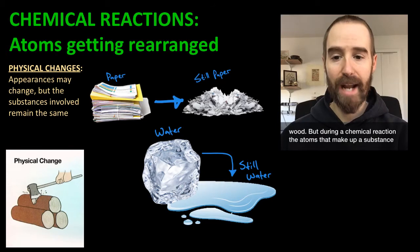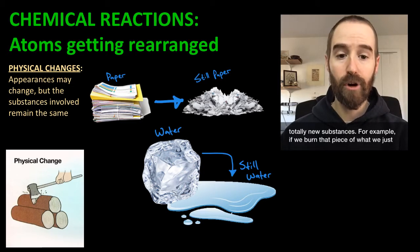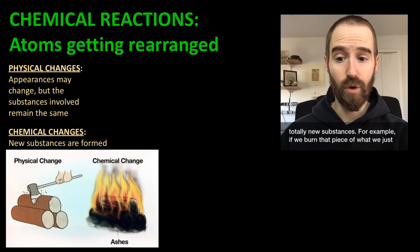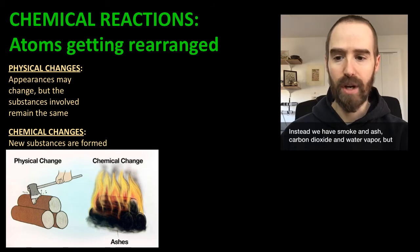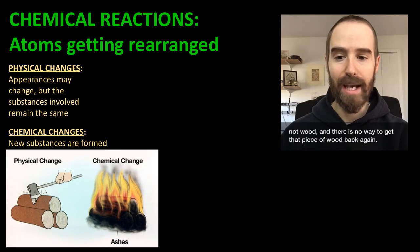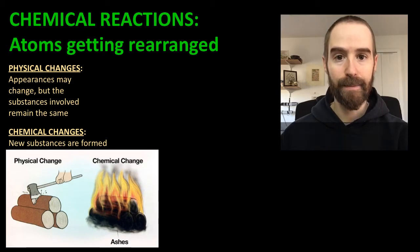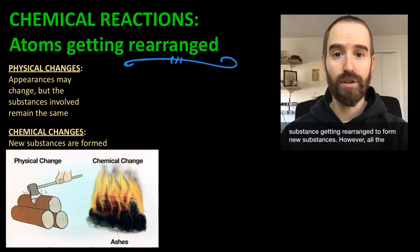But during a chemical reaction, the atoms that make up a substance break their bonds and form new bonds with different atoms to create totally new substances. For example, if we burn that piece of wood we just chopped, we change it into something that's not wood anymore. Instead, we have smoke and ash, carbon dioxide and water vapor — but not wood, and there is no way to get that piece of wood back again. That's what a chemical reaction is: the atoms that make up a substance getting rearranged to form new substances.